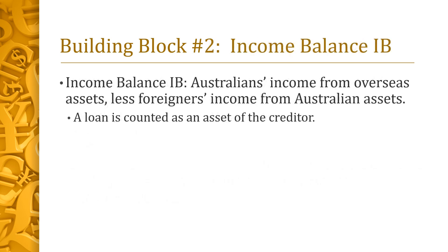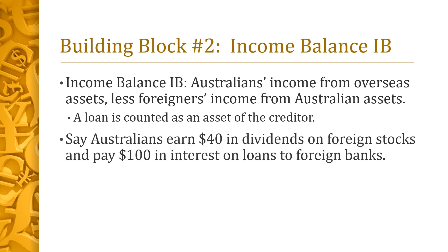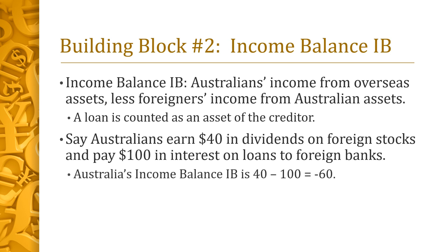We now turn to the second building block, a country's income balance, or IB for short. IB equals Australia's income from overseas assets, less foreigners' income from assets in Australia. This is where interest payments are counted, since a loan is considered to be an asset from the lender's point of view. For instance, suppose that Australian households receive $40 in dividends on foreign stocks that they own, and also pay $100 in interest on loans to foreign banks. Then the income balance IB equals 40 minus 100, which is minus 60.